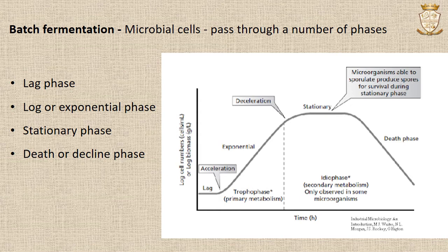Up to the end of the log phase is known as the tropophase, and starting from the stationary phase is known as the idiophase. The production of growth-associated products or primary metabolites occurs during the tropophase, and the production of non-growth-associated products or secondary metabolites occurs during the idiophase.